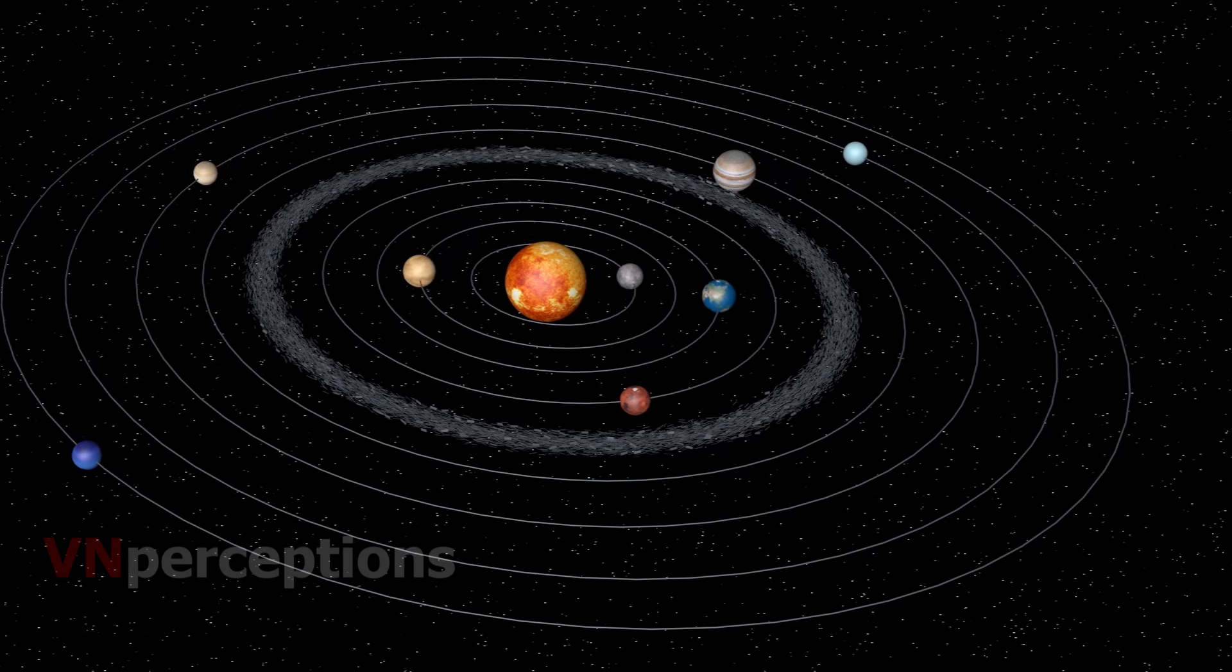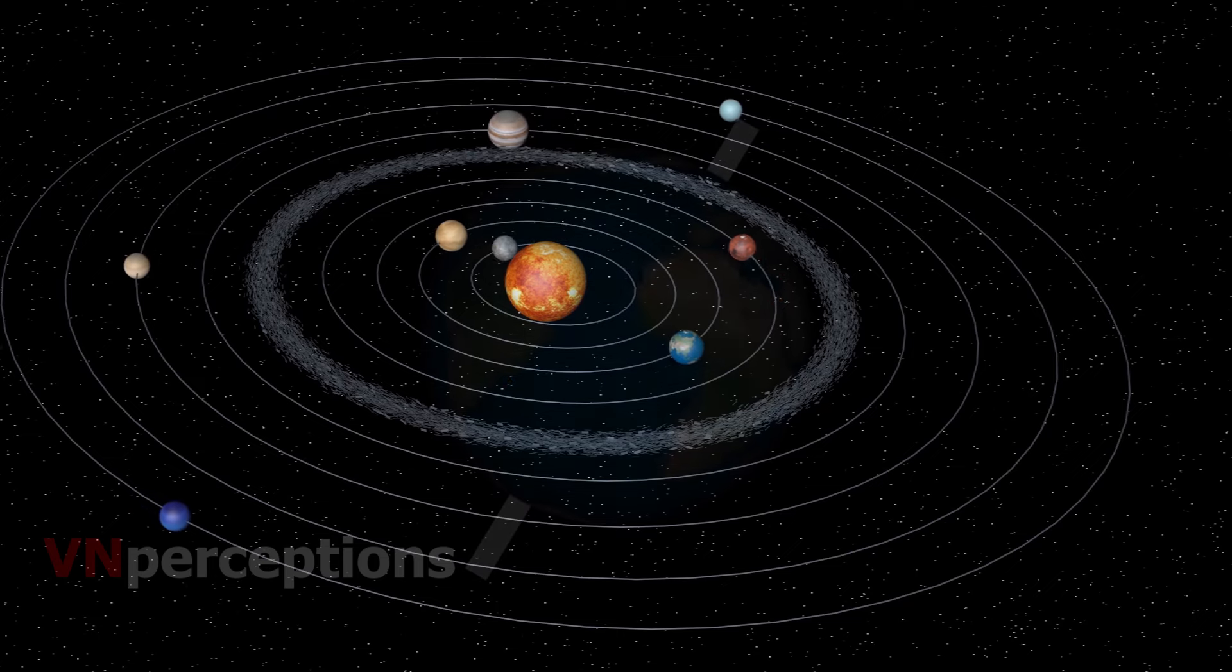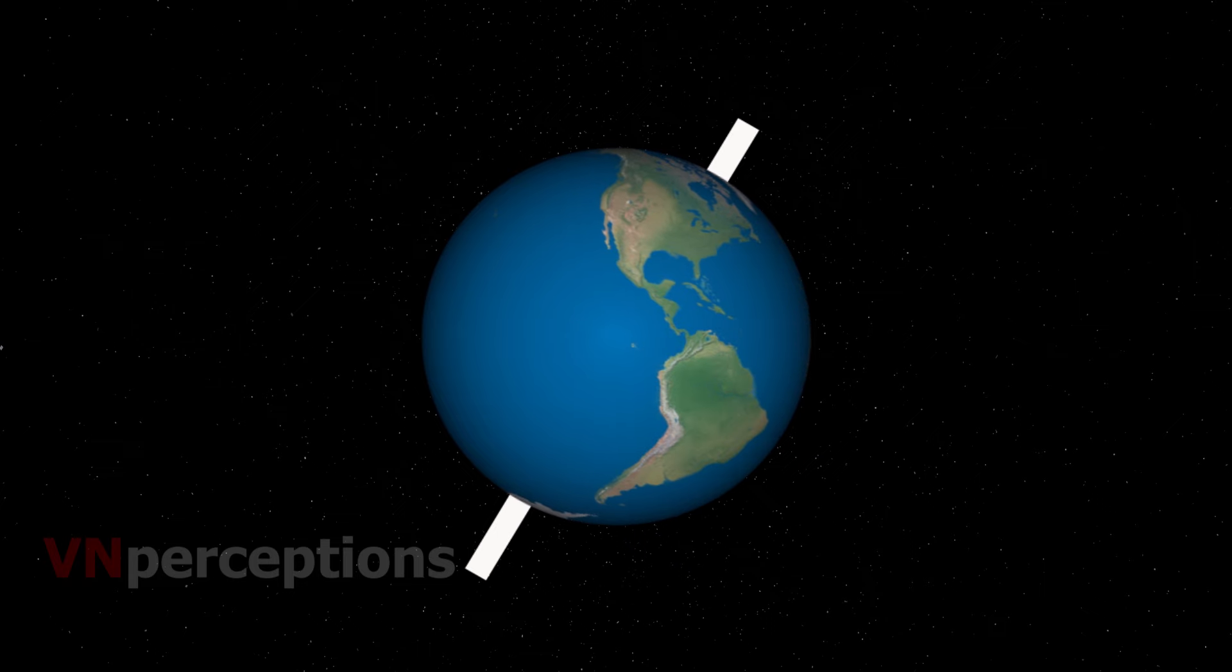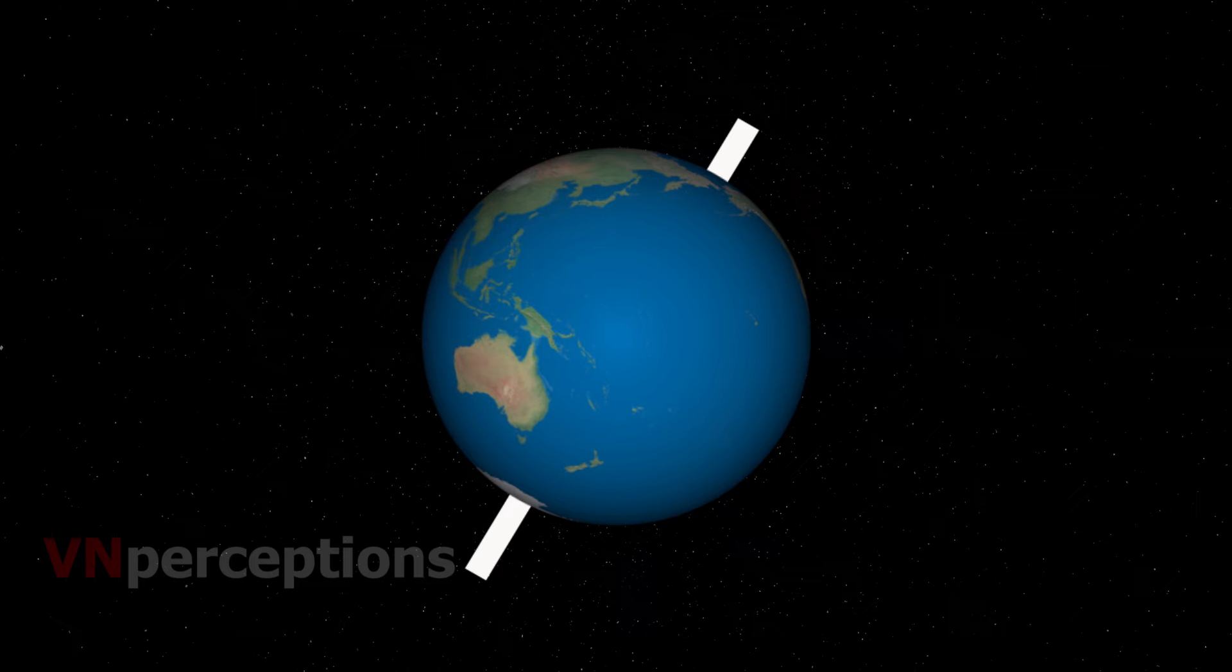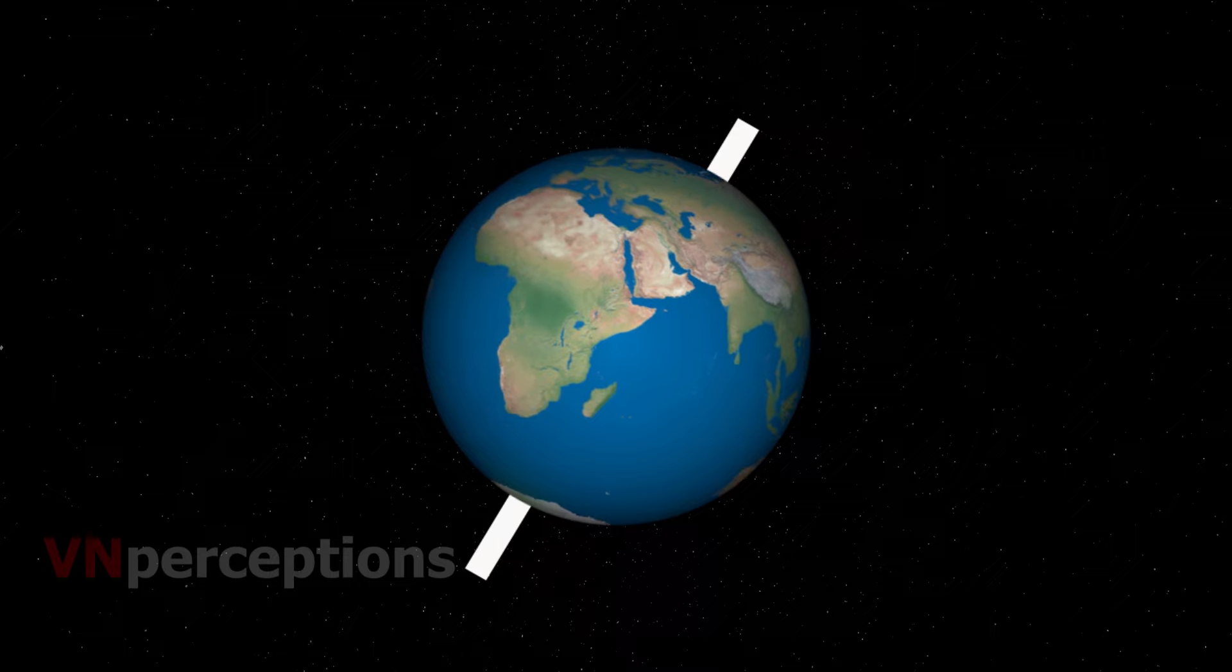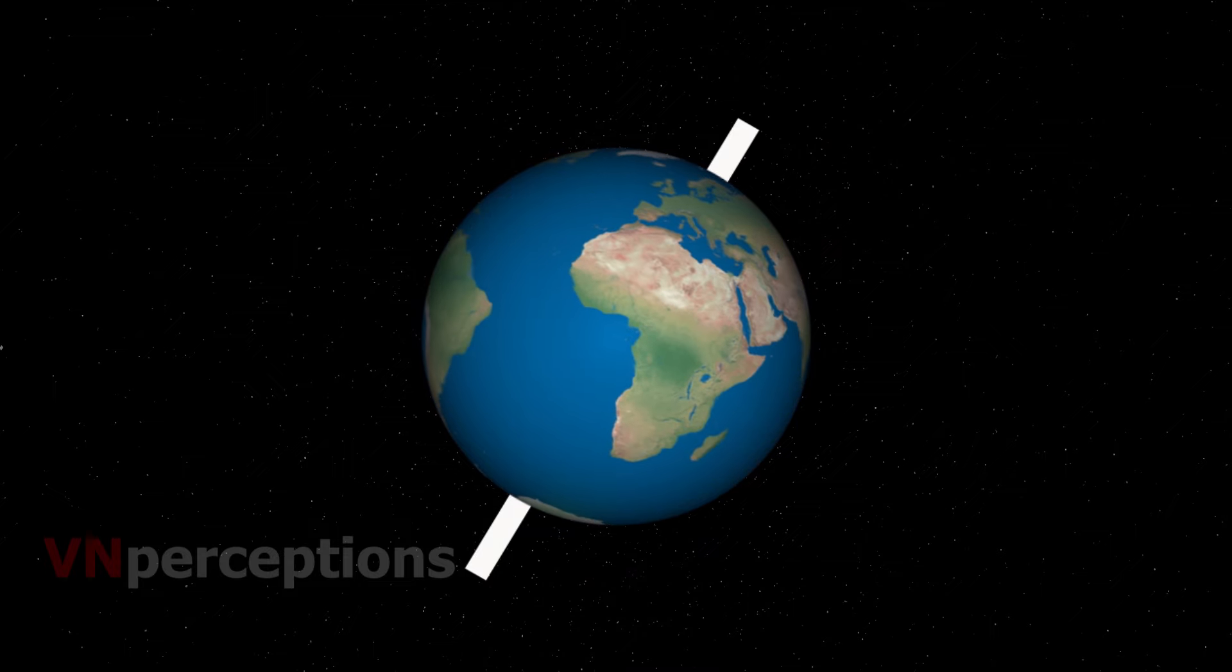The time taken by a planet to complete one revolution is called its period of revolution. The period of revolution increases as the distance of the planet increases from the sun. Besides revolving around the sun, a planet also rotates on its own axis like a top. The time taken by a planet to complete one rotation is called its period of rotation. Some planets are known to have moons, satellites revolving around them.